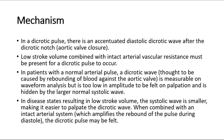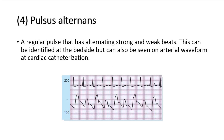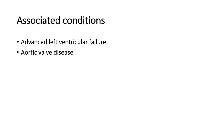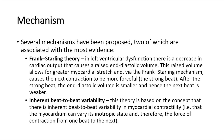The fourth type is pulsus alternans. This is a regular pulse that has alternating strong and weak beats. This can be identified at the bedside, but can also be seen on arterial waveform at cardiac catheterization. It is associated with advanced left ventricular failure and aortic valve disease. Several mechanisms have been proposed, two of which are associated with the most evidence.